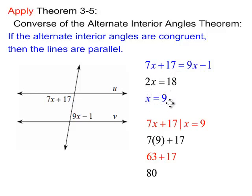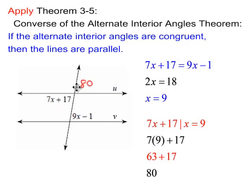Substituting 9 in for x and working it out, I get 80 for an answer. So this angle is 80 degrees, and this one is also 80 degrees — they're congruent. Then this is 80 and so is this. That's a linear pair, so that's 100, and that's 100, and that's 100, and there's 100 right there.